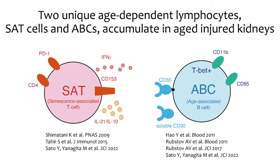Firstly, by single-cell RNA-seq analysis and flow cytometry, we found the accumulation of two unique age-dependent lymphocytes — senescence-associated T-cells and age-associated B-cells — in aged injured kidney with TLT. SAT-cells are a CD4 T-cell subpopulation characterized by cell surface expression of PD-1 and TNF superfamily member molecule CD153. Additionally, SAT-cells produce ABC-inducing factors such as IL-21 and interferon gamma. ABCs are B-cells characterized by cell surface expression of CD11B and CD95. We also found that ABCs expressed CD30, the receptor of CD153.